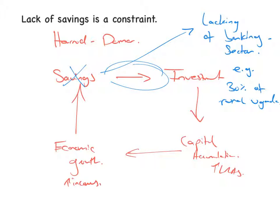Another contributing factor is that income levels are so low in some developing countries that there is a very low marginal propensity to save — people simply can't afford to save. So there's no saving both because they can't afford it and because there's nowhere to save. This is a significant issue in developing countries.